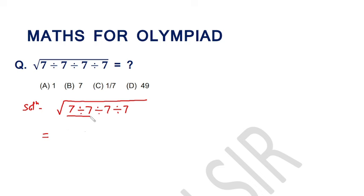right. Now this question becomes very simple. 7 divide 7 means 1, divide 7, divide 7. The square root of 1